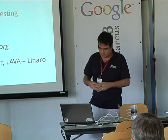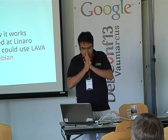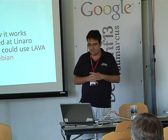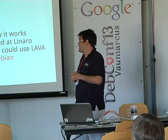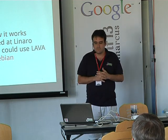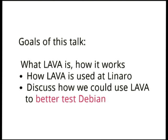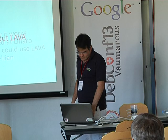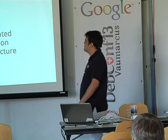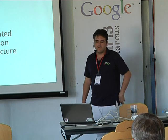And then we come to Lava, which is a platform for system testing on real hardware. The goals of this presentation are: first, to discuss what Lava is and how it works. I will talk briefly about how Lava is used at Linaro, and then discuss how we can use Lava to better test Debian on cases where we need to test on actual hardware, not in virtual machines. Lava stands for Linaro Automated Validation Architectures.